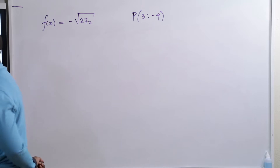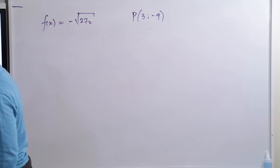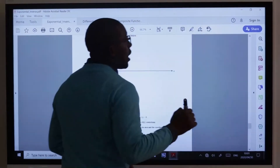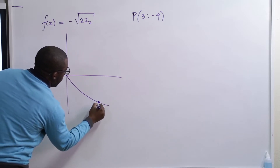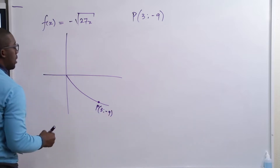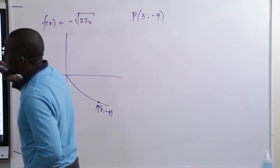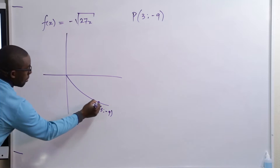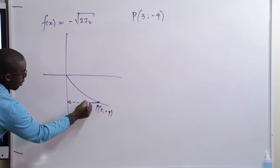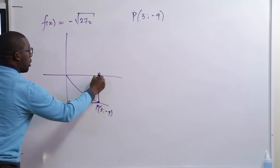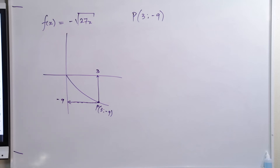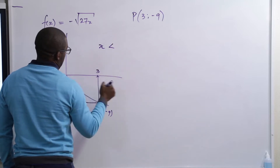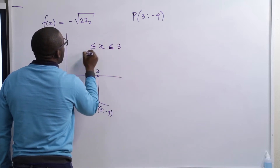The point P is at 3 and minus 9. They are asking where is the graph of F of X greater or equal to minus 9. That means I am going to interpolate from this point straight to the Y axis, then interpolate straight to the X axis. This is 3 and this is minus 9. Where is the function above minus 9 in terms of Y values? The corresponding X values go from X less or equal to 3 but greater or equal to 0.